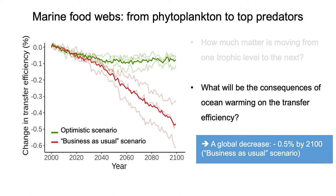And we found that the transfer efficiency is expected to decrease by 0.5% by 2100, if the worst case scenario happens.